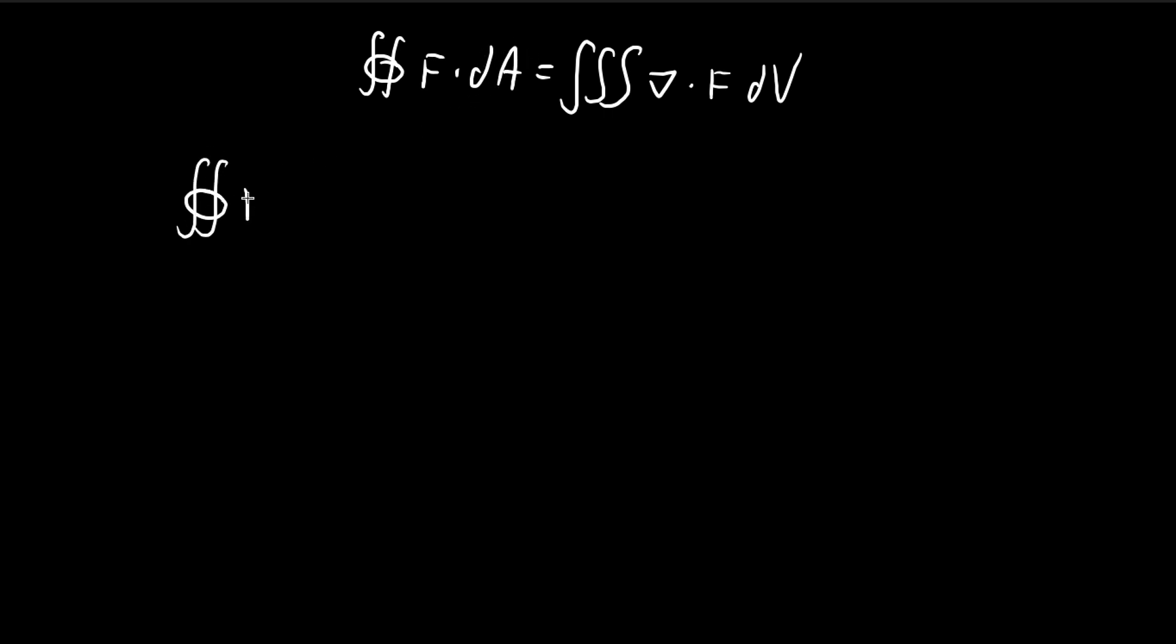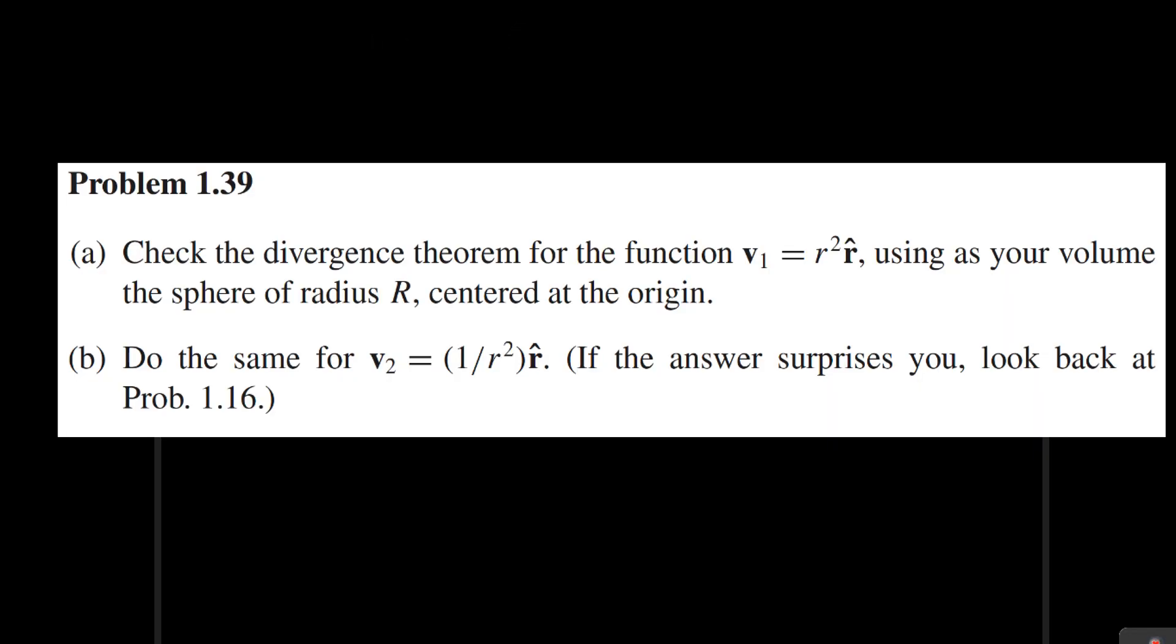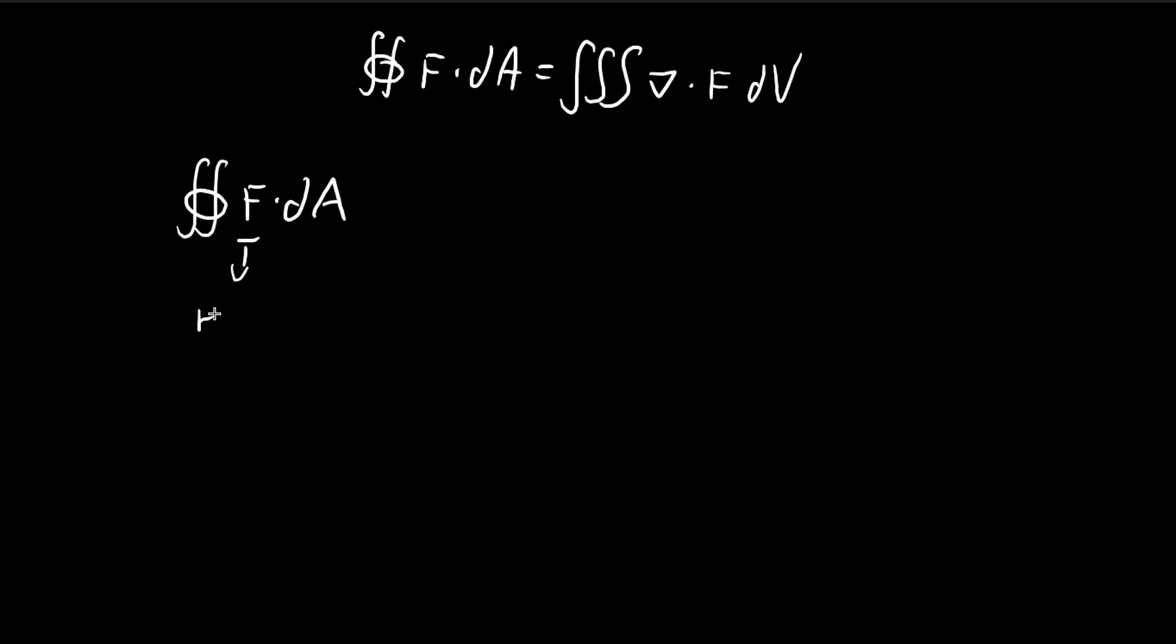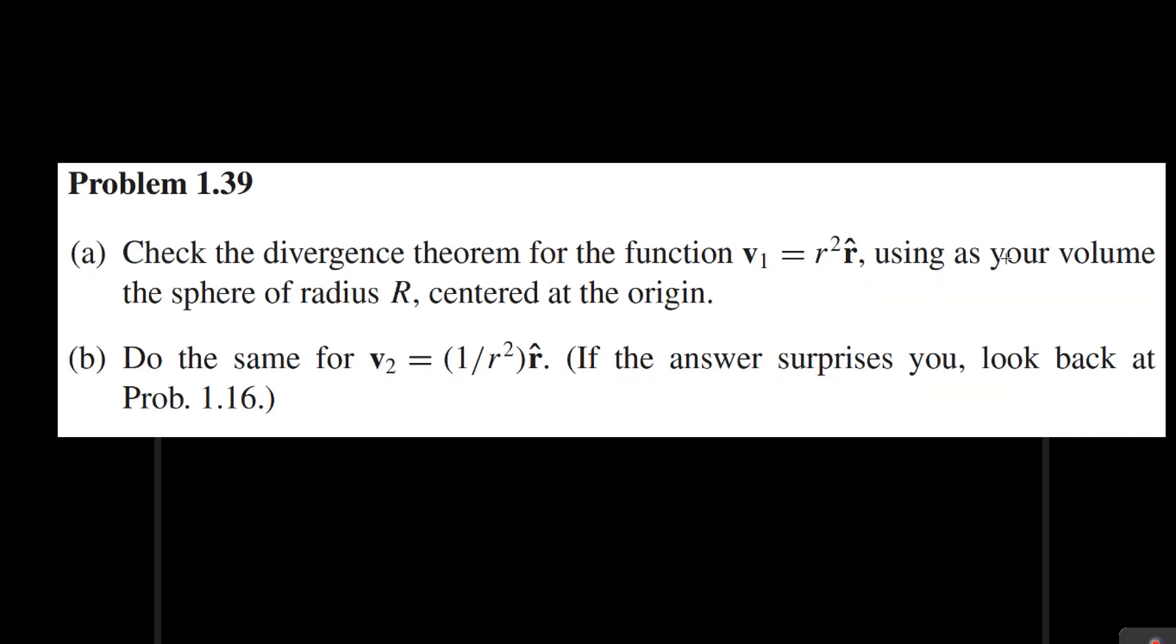So let us try to evaluate the flux first. For the force field, we're given it's equal to r squared r hat. So r hat is a vector that points in the radial direction. And dA here, you see that dA is also a vector, you see the dot product here. And dA is going to point in a direction that is perpendicular to the surface. And the surface that we're considering is a spherical shell with radius r.